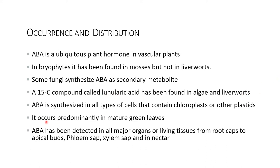Abscisic acid is synthesized in all types of cells that contain chloroplasts and other plastids. It occurs predominantly in mature leaves. Abscisic acid has been detected in all major organs and living tissues, from root cap to apical bud, phloem sap, and xylem sap.